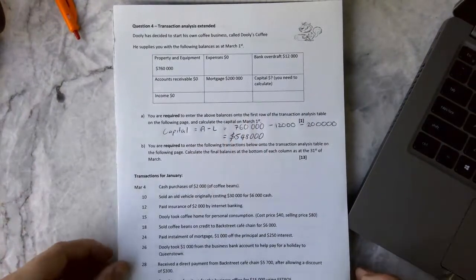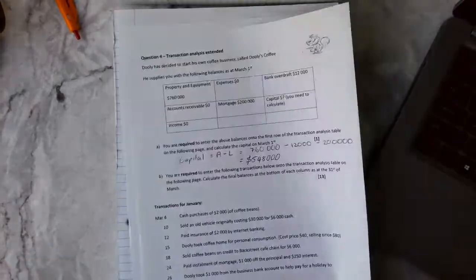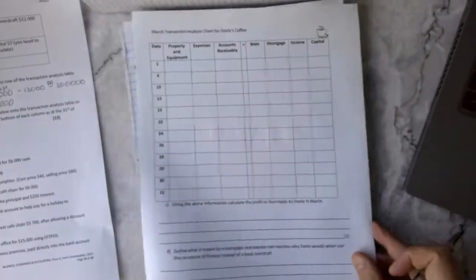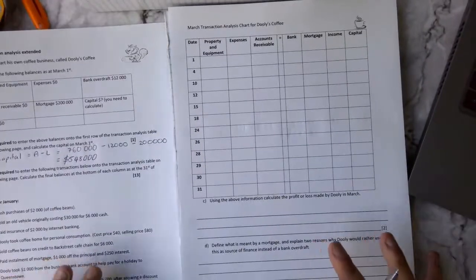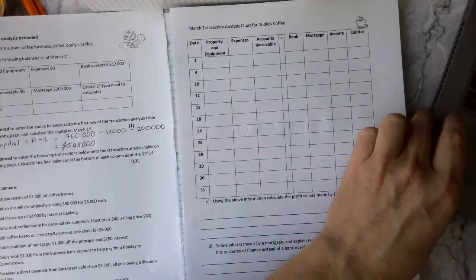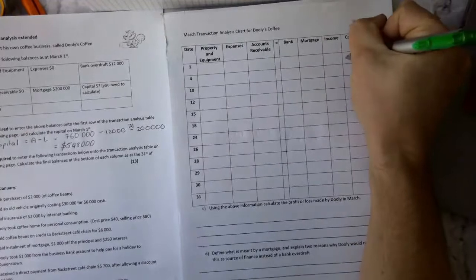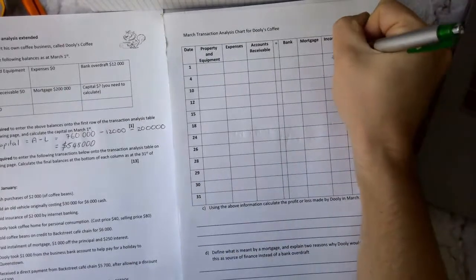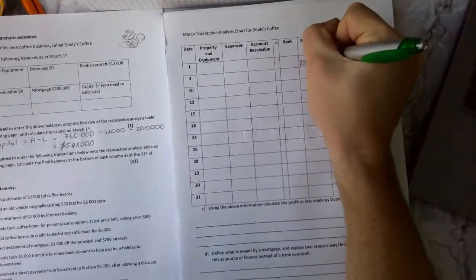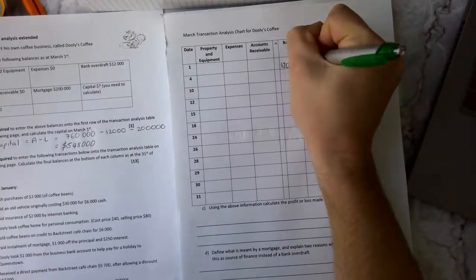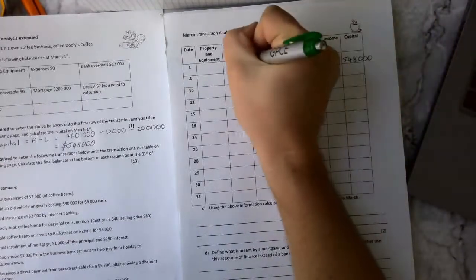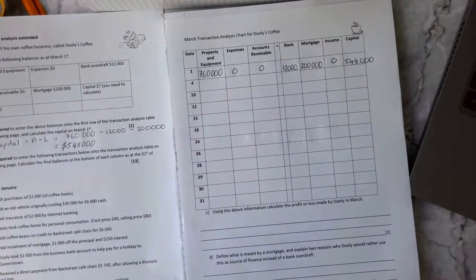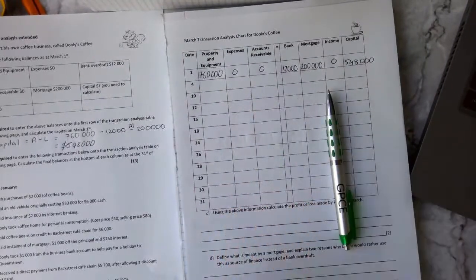So now we can take that to the next stage and put that into our transaction table on the next page. So on the next page there was this document here, and you basically needed to fill in the blanks. And I'll get these side by side for you so we can see both of them. Perfect. So our capital, we can start off by putting 548,000 in there. And we know income was zero, the mortgage was $200,000, bank was $12,000, accounts receivable was zero, expenses was zero, and the property, plant, and equipment was $760,000. And as we can see, that top row, now the left hand side where my pen is now equals the right hand side which is over there.